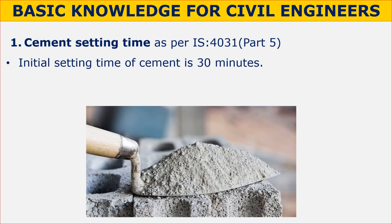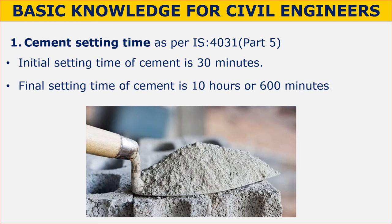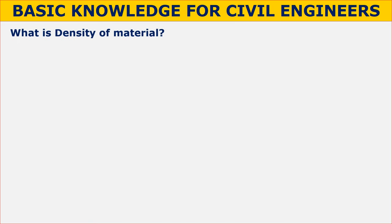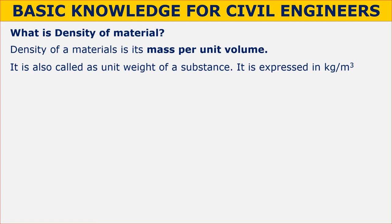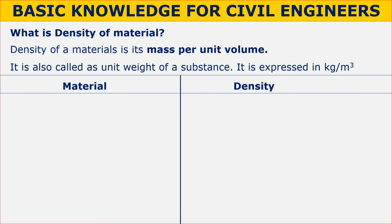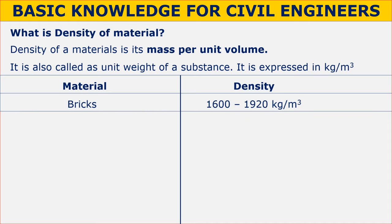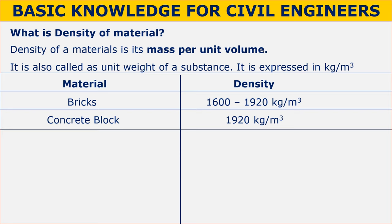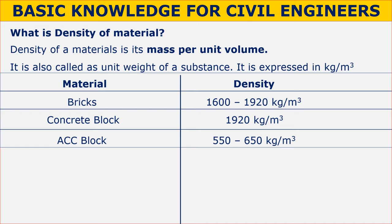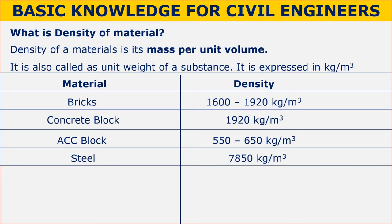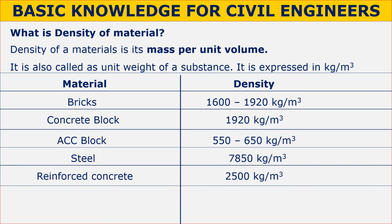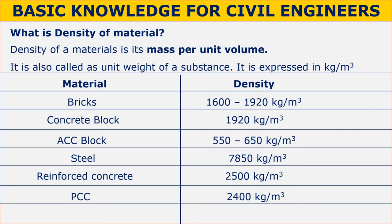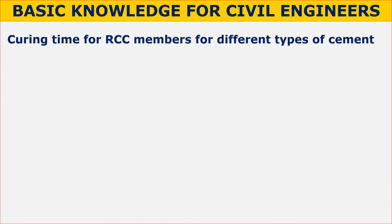As per IS 4031 Part 5, the initial setting time of cement is 30 minutes and the final setting time is 10 hours (600 minutes). The density of a material is its mass per unit volume, also called unit weight, expressed in kg/m³. Key material densities: bricks — 1600 to 1920 kg/m³; concrete blocks — 1920 kg/m³; AAC blocks — 550 to 650 kg/m³; steel — 7850 kg/m³; reinforced concrete — 2500 kg/m³; PCC — 2400 kg/m³; water — 1000 kg/m³.